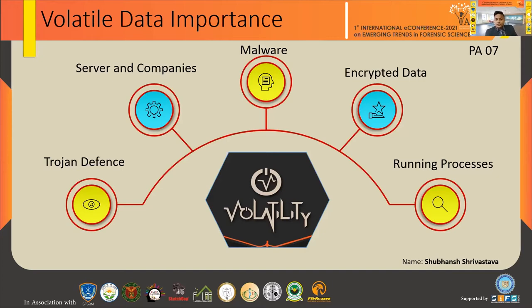Regarding running processes: whatever processes are running on a system — like this Zoom meeting and this presentation — these are running in RAM memory. If the system is turned off, those processes would be closed. Running processes, transactions, open DLL files — all of these can be analyzed through volatile data.